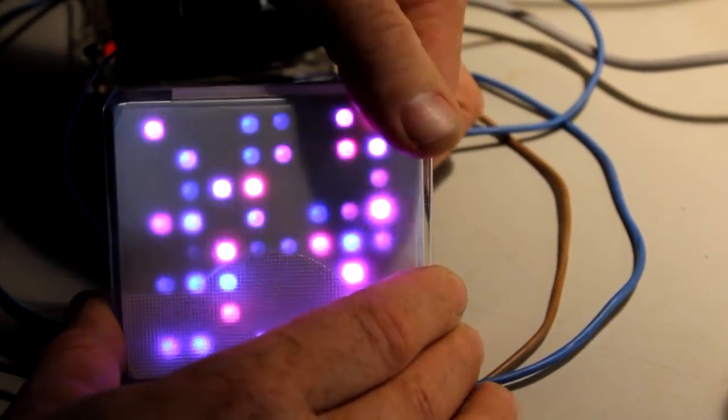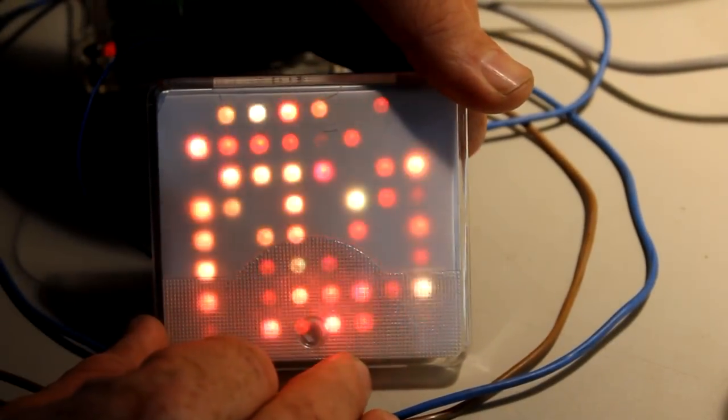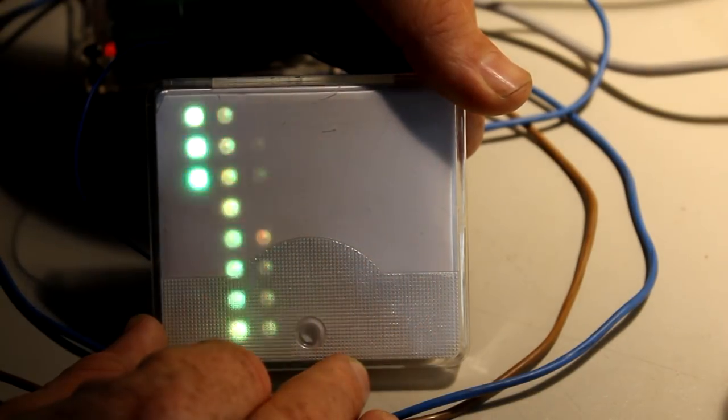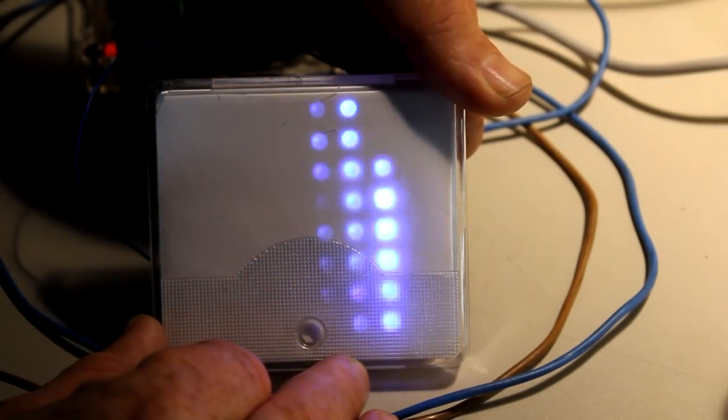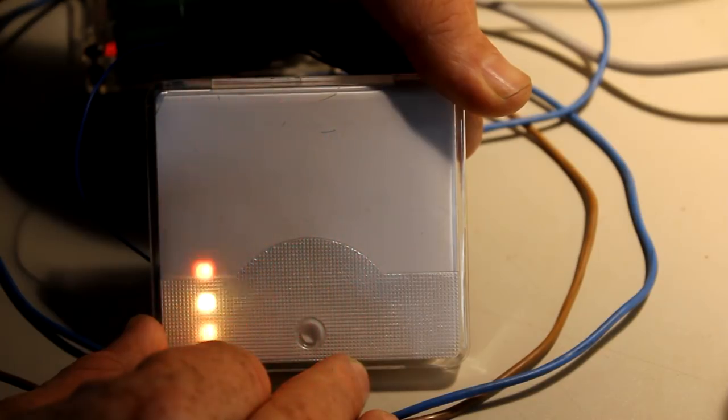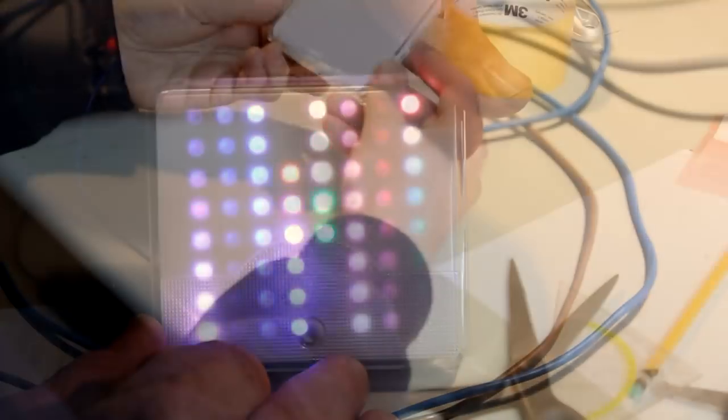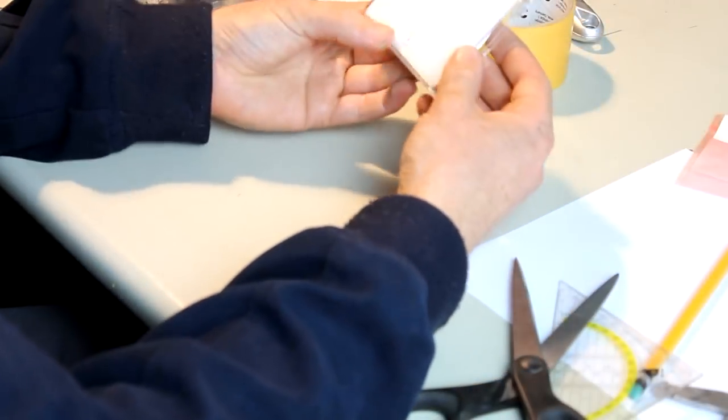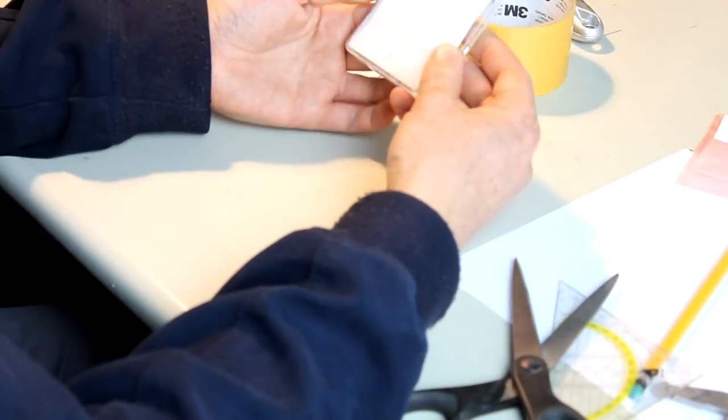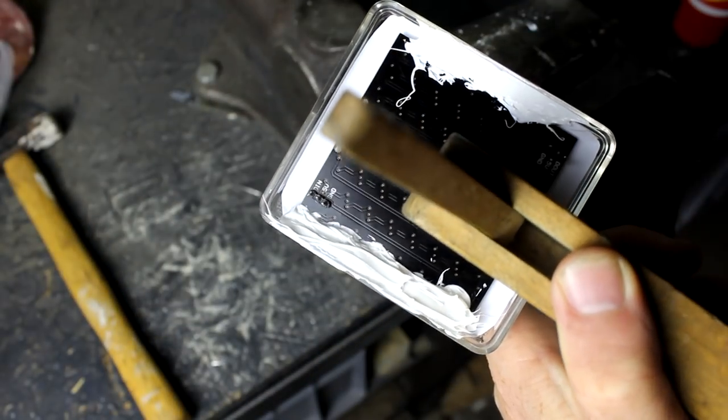So it just so happens that it fits pretty well around the NeoPixel matrix here. But I also want to diffuse the LEDs, and for that I just cut out a little bit of paper, because that actually works pretty well. And by slightly increasing the distance between the paper and the LEDs, you can get all kinds of interesting blur effects and stuff like that.